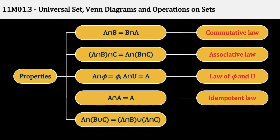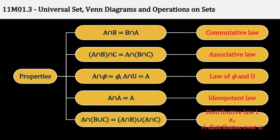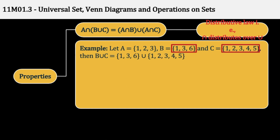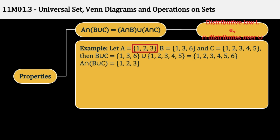पाँचवाँ: A Intersection (B Union C) is equal to (A Intersection B) Union (A Intersection C). यहाँ पर आप देख सकते हैं, Intersection sign Union के रहते दोनों पर Distribute हो गया है, तो इसको बोलते हैं Distributive Law, मतलब की Intersection distributes over Union. Example से समझते हैं: Let A = {1, 2, 3}, B = {1, 3, 6}, and C = {1, 2, 3, 4, 5}. अब B Union C पहले निकालता हूँ, इस Equation की Left Hand Side निकालने के लिए. B Union C आता है {1, 2, 3, 4, 5, 6}. अब मैं इसका Intersection निकालता हूँ Set A के साथ: {1, 2, 3} Intersection {1, 2, 3, 4, 5, 6}, तो वो आता है {1, 2, 3}. यह होगी हमारी Equation No. 1.